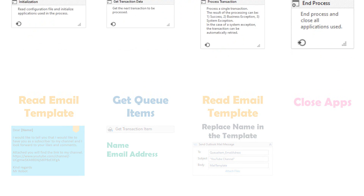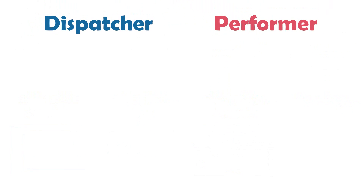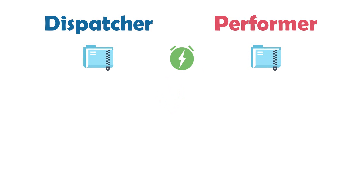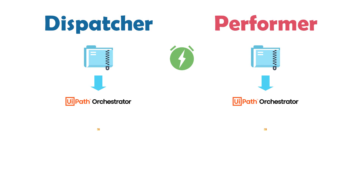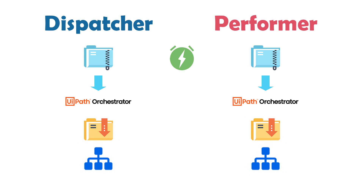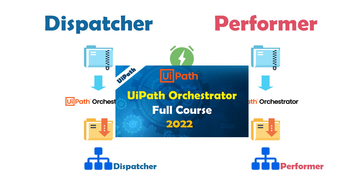We implemented both processes — dispatcher and performer. How can we schedule these processes in Orchestrator? First, both processes should be published in Orchestrator. In Orchestrator we then have two packages, one package for each process, and we make a process out of every package — we create a dispatcher process and a performer process. After creating the two processes in Orchestrator, we can schedule them. If you haven't watched the Orchestrator video yet, now is the time to watch it to learn more about triggers. I will make a little reminder here though.